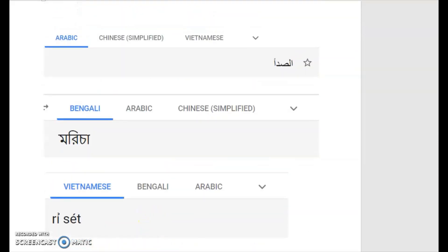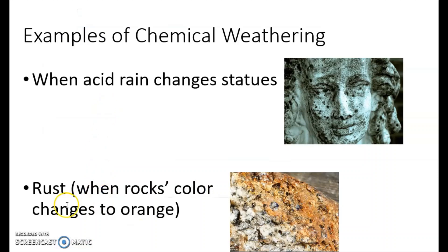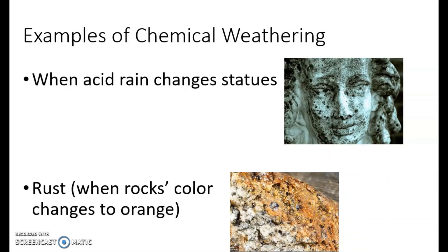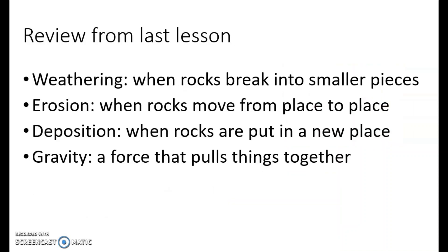Rust — when a rock's color changes to orange. Like if you ever have something metal and you leave it outside in the rain, it rusts — it changes to orange. That is another example of chemical weathering.